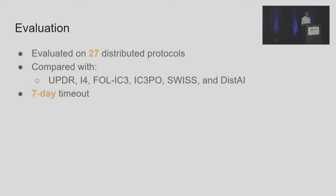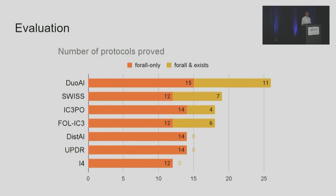We evaluate Dual AI on 27 common distributed protocols. Among them, 15 are provable with only universal invariants and the other 12 require both for-all and exists. We compare Dual AI with six existing tools: UPDR, i4, FOLIC3, IC3PO, SWIS, and DisDai, allowing each tool to run seven days on each protocol. Dual AI solves 26 out of 27 protocols — more than any other tool. DisDai, UPDR, and i4 are only able to prove protocols provable with universal invariants. Dual AI, along with SWIS, IC3PO, and FOLIC3, are able to find invariants with both for-all and exists. Yet Dual AI proves more protocols in both the for-all-only category and the exists-included category.